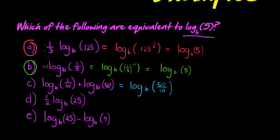So 50 times one-tenth gives me 50 over 10, which is 50 divided by 10, simply 5. So log base b of 5 is what I get if I simplify this. So this one is equivalent as well.